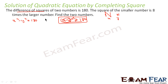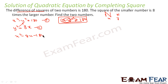This is equation one. The second condition: y² = 8x. This is equation two. Substituting y² = 8x into equation one: x² − 8x − 180 = 0. This is the quadratic equation in x only. Now I solve by completing the square: x² − 2·x·4 + 4² − 4² − 180 = 0.